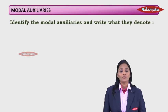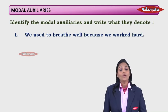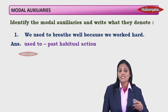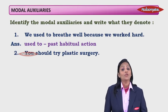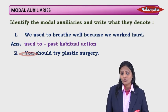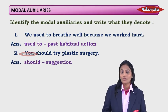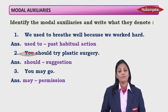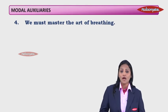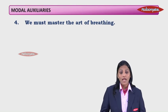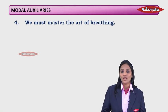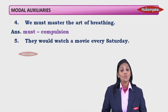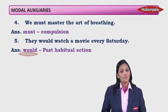Second exercise — identify the modal auxiliary and state what it denotes. 'We used to breathe well because we worked hard' — 'used to' — past habitual action. 'You should try plastic surgery' — 'should' — advice or suggestion. 'You may go' — 'may' — permission. 'We must master the art of breathing' — 'must' — compulsion, not guess. 'They would watch a movie every Saturday' — 'would' — past habitual action.